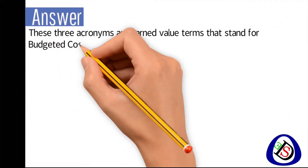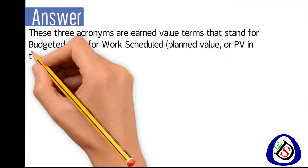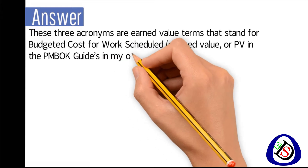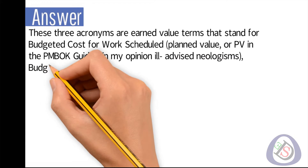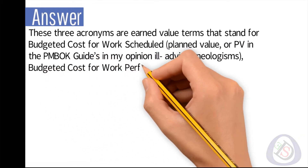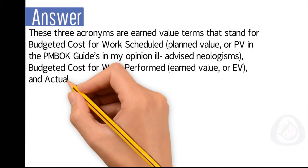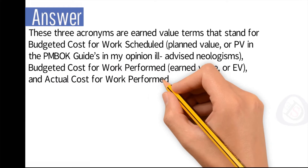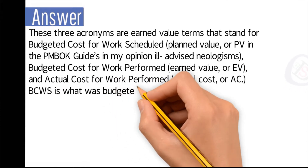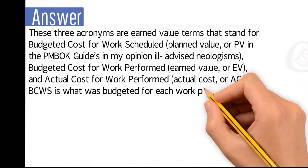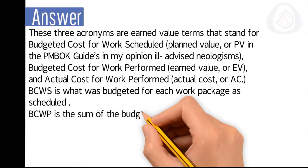Answer: These three acronyms are earned value terms that stand for Budgeted Cost for Work Scheduled, also known as Planned Value (PV) in PM guides. Budgeted Cost for Work Performed, also known as Earned Value (EV), and Actual Cost for Work Performed, also known as Actual Cost (AC).